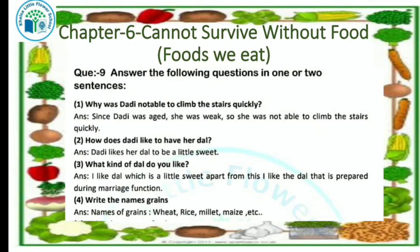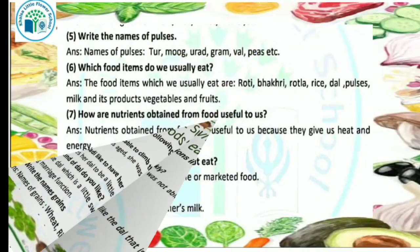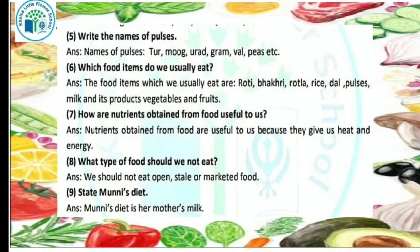Now let's see the next question: write the names of grains. Our next question is: which food items do we usually eat? The food items which we usually eat are roti, bakri, rotla, rice, dal, pulses, milk and its products, vegetables, and fruits. These are usually what we eat.